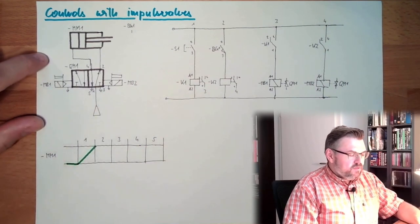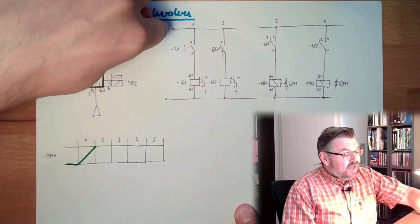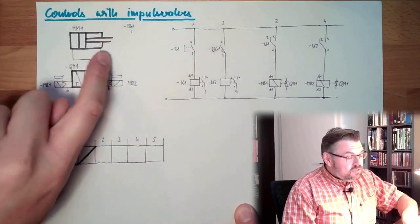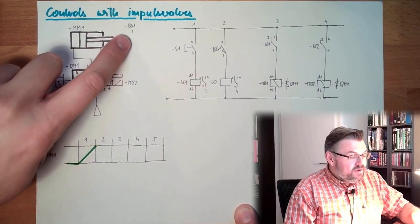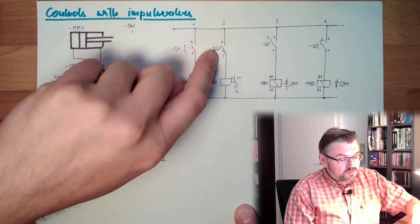This will switch back to this position. MM1 will start to travel inwards, okay? If MM1 is traveling inward, it will release BG1, and BG1 is released.